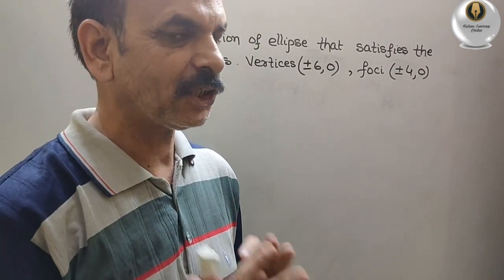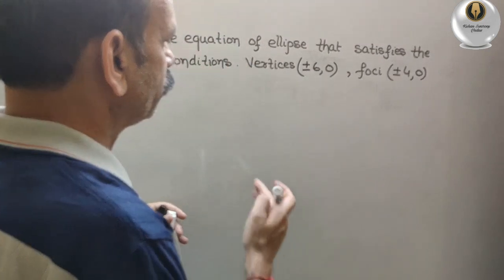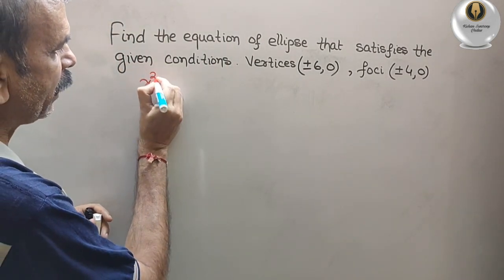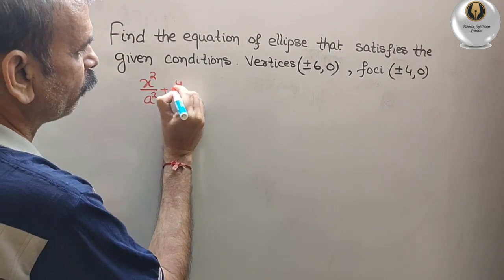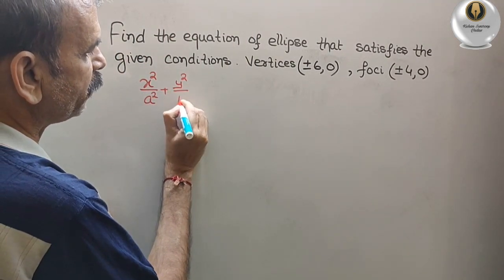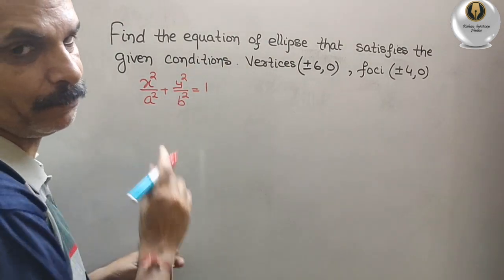So first we will write the standard form of equation. That is x square by a square plus y square by b square, that is equal to 1. This is the equation of ellipse.